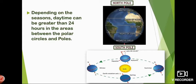The next two important parallels are the North Pole and South Pole. The North Pole is at 90 degrees North and the South Pole is at 90 degrees South. In the areas between the polar circles and the poles, depending on the seasons, daytime can be greater than 24 hours. So at the poles — at the North Pole and South Pole — depending on seasons, daytime is greater than 24 hours.